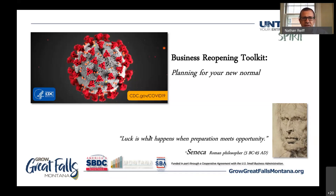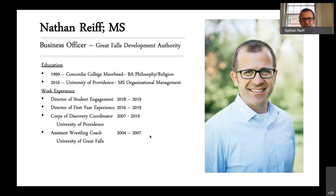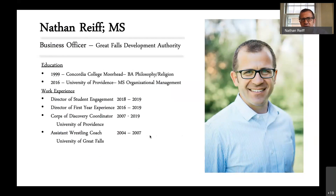This is the Business Reopening Toolkit: Planning for Our New Normal. This is actually the second one we've done. My name is Nathan Reif. I got a bachelor's in philosophy and religion at Concordia College, Moorhead, and then my master's of organizational management at the University of Providence. I am now a business officer — I started in October of last year. Before that, I worked at the University of Providence first as an assistant wrestling coach, and then in their student development department in several different roles.